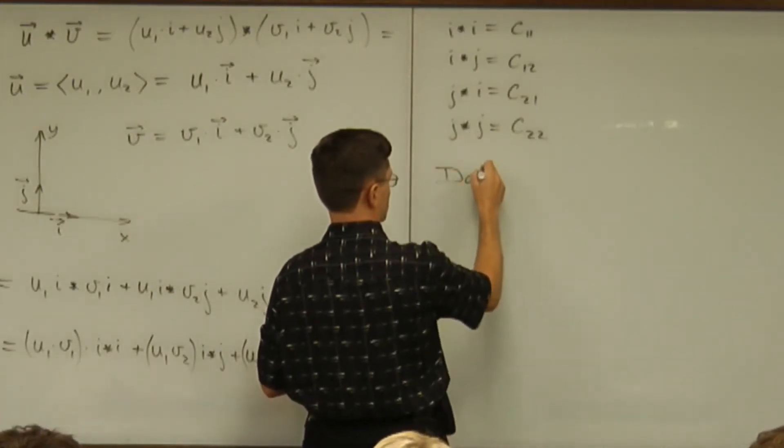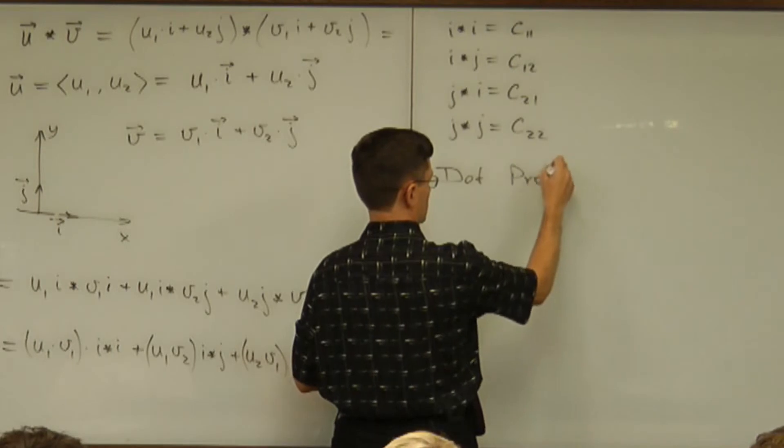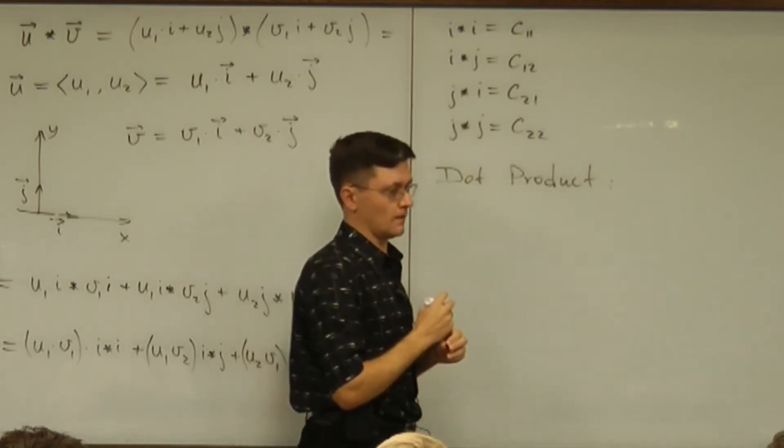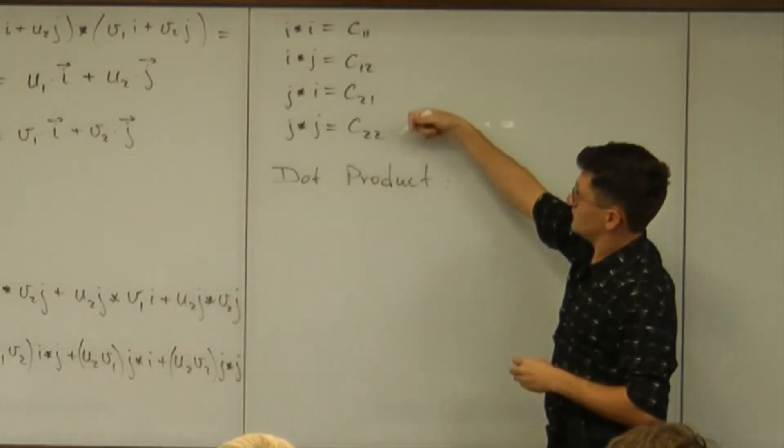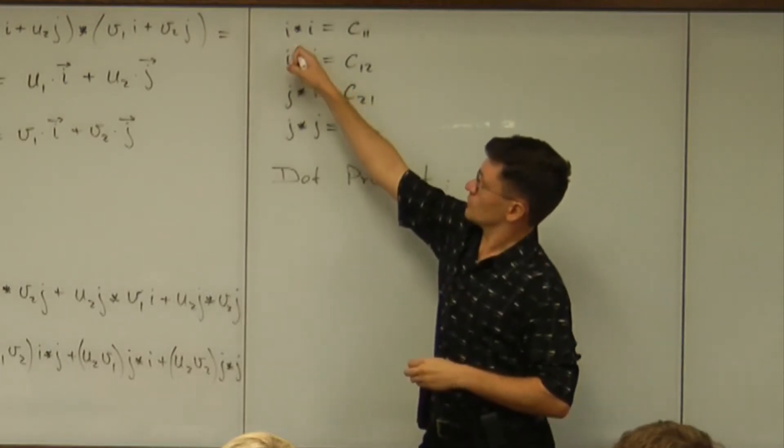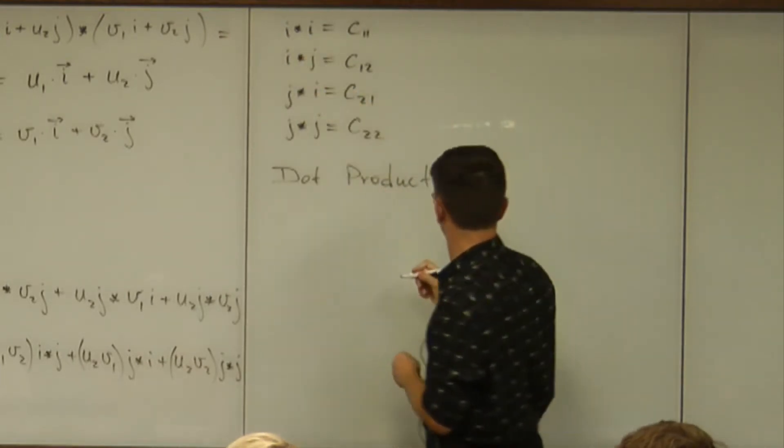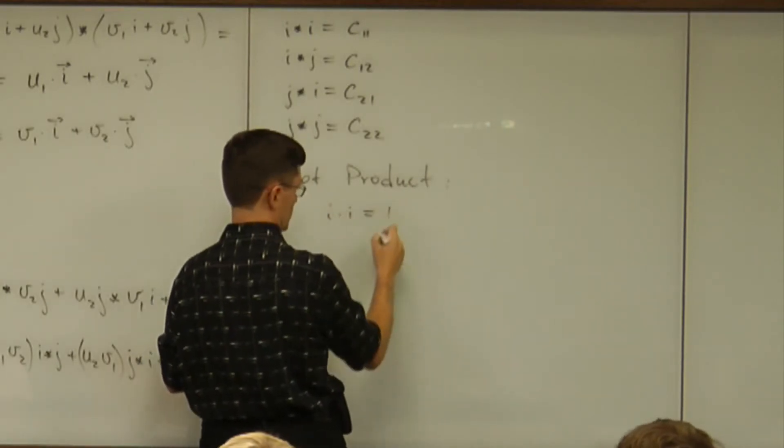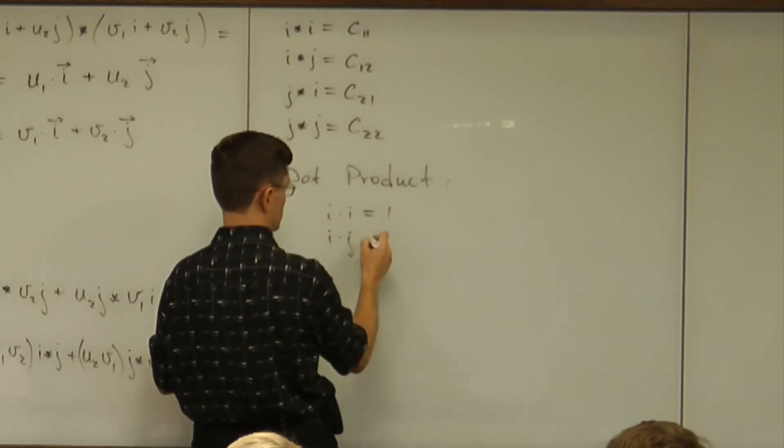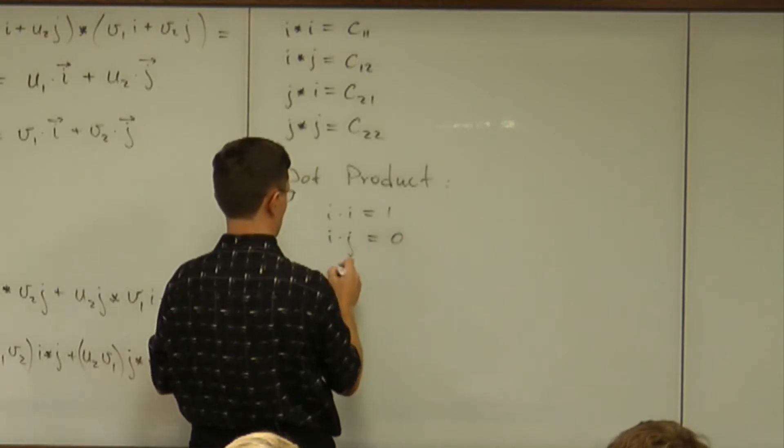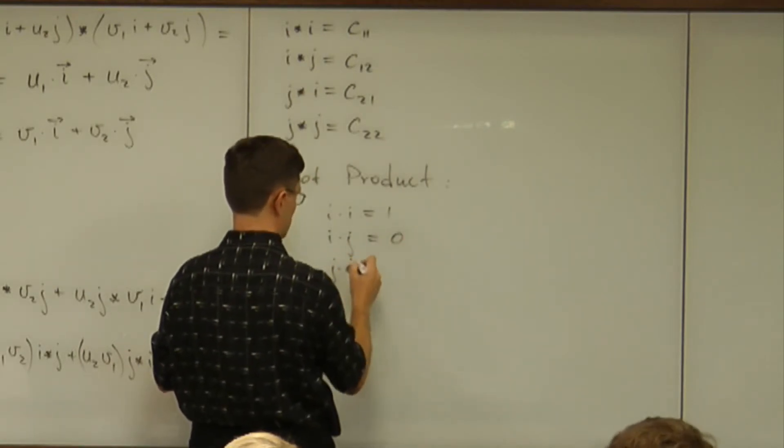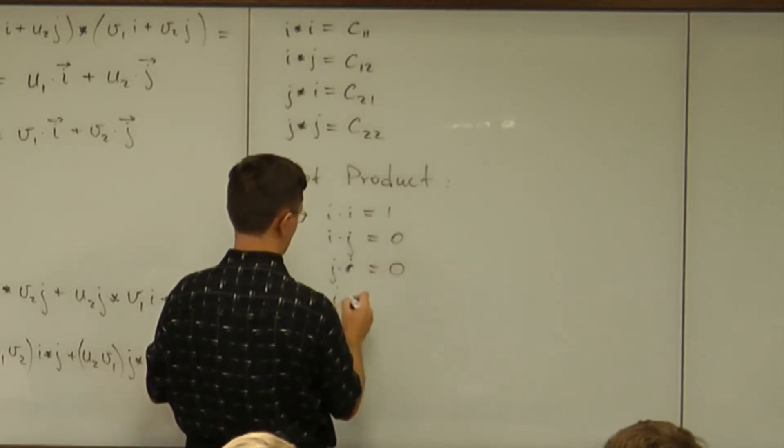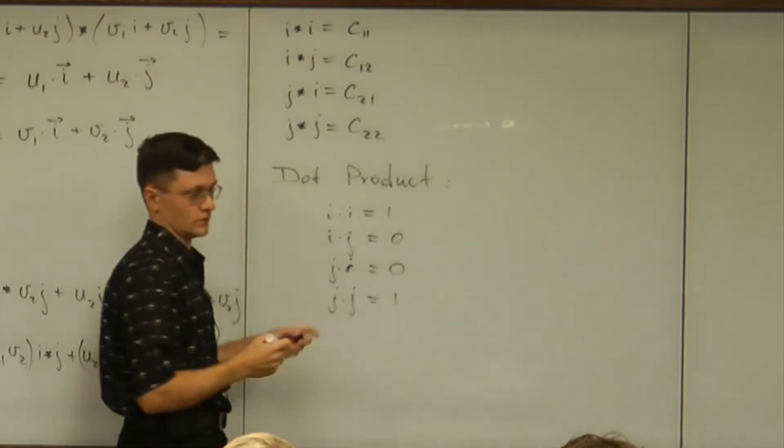For the dot product: i dot i is 1, i dot j is 0, j dot i is 0, and j dot j is 1. So, these are the numbers.